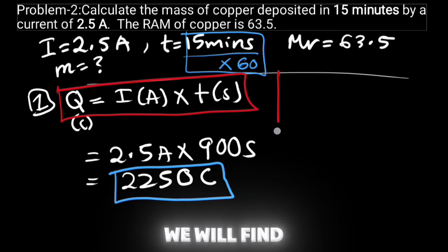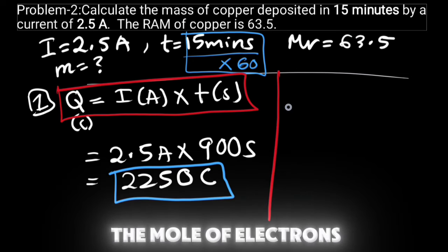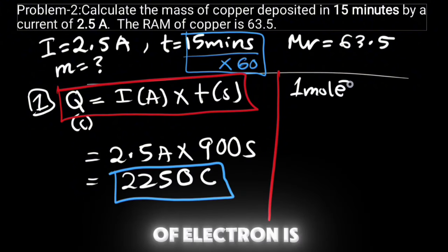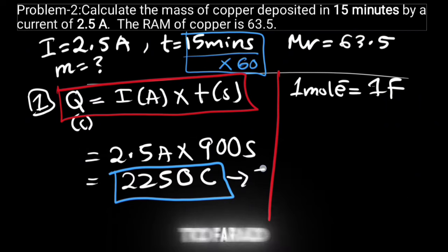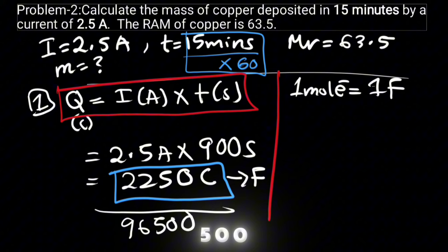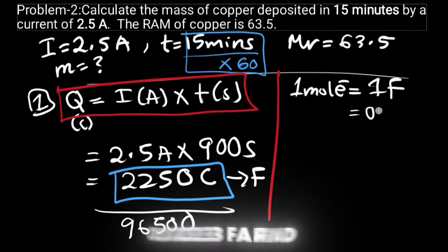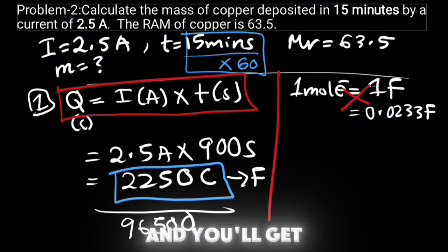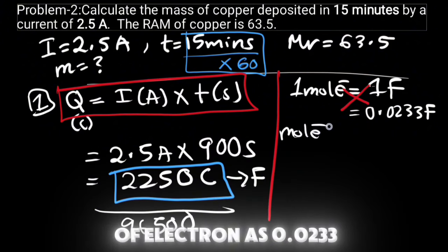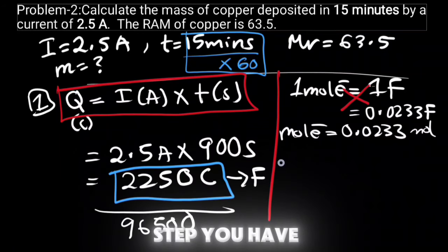Now after getting the charge, we will find the mole of electrons. One mole of electron is equal to one faraday. So we will change this coulomb to faraday by dividing it by 96500. When you divide this number by 96500, you will get 0.0233 faraday. You will get here your mole of electron as 0.0233 mole.